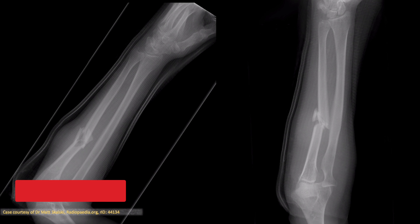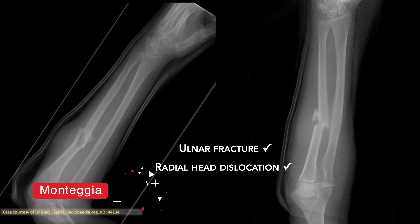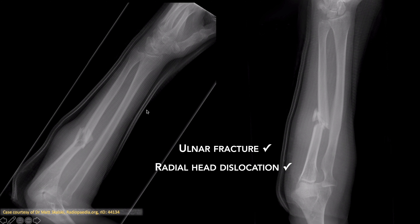This is another case of Monteggia fracture-dislocation. There is a comminuted fracture of the mid-diaphysis of the ulna. The radial head is dislocated anteriorly. Overlying cast material is noted.